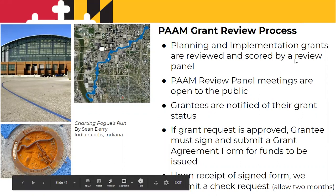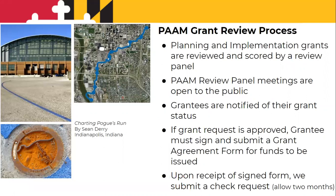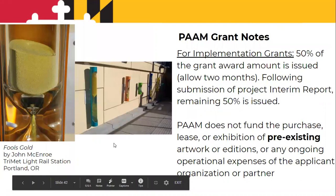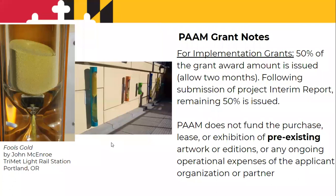Both planning and implementation grants are reviewed and scored by a review panel — the meetings are open to the public. All applicants are notified of their grant status. If your grant request is approved, you sign the grant agreement form, and upon receipt we submit a check request. You should receive your check within a couple of months. The implementation grant is split into two payments: you receive 50% of the grant up front, and then following the submission of your interim report — at the check-in date you set — the remaining funds are issued. You might want to plan that in accordance with how you're paying the artist.